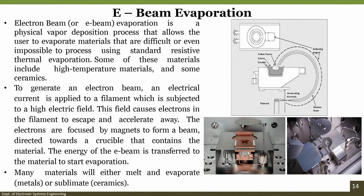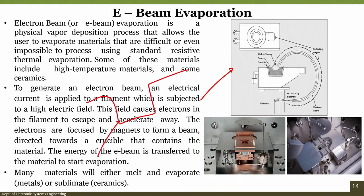Some materials that can be deposited include high-temperature materials and ceramics. In e-beam evaporation, we cannot use the metal boat from before. Instead we use a crucible — typically quartz, which has an extremely high melting point. We load the source material into the crucible, and the electron beam hits the source directly, causing it to melt and evaporate.